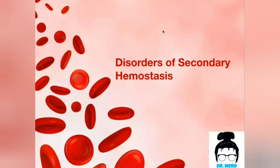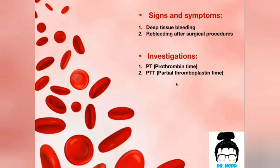Let's discuss the bleeding disorders of secondary hemostasis. The general signs and symptoms include: first, deep tissue bleeding. Remember how in primary hemostasis disorders the bleeding used to be superficial — the patient would present with bleeding in the skin, in the mucosa. While in secondary hemostasis disorders, the bleeding would be deep — bleeding into the joints, into the muscles. The other symptom is re-bleeding after surgical procedures, such as a patient who extracted a tooth and the bleeding wouldn't stop.